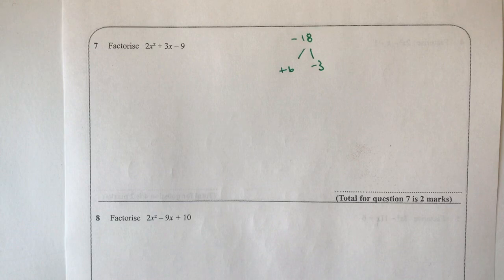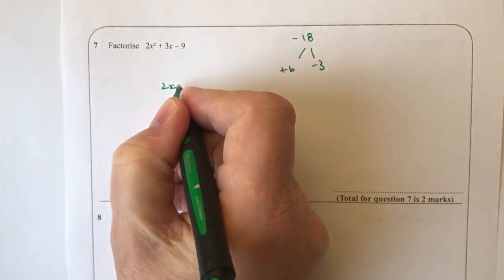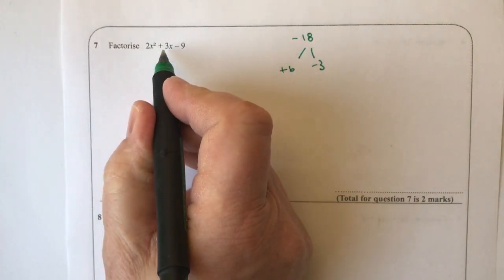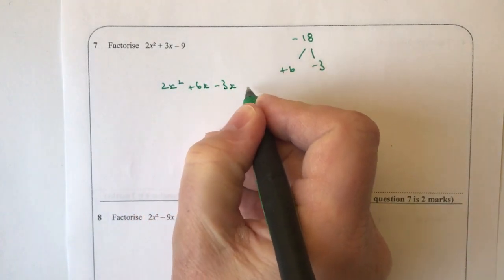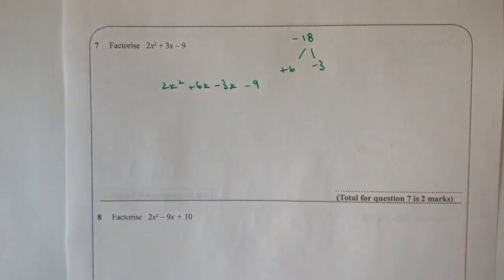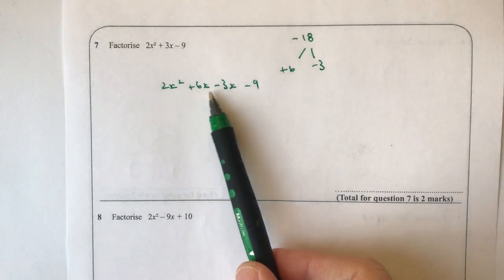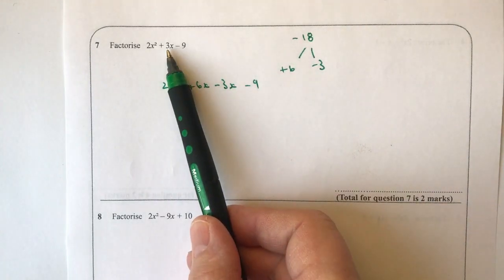So what I'm going to do now is I'm going to rewrite the original equation. I'm going to write 2x squared, and rather than writing plus 3x, I'm going to write plus 6x minus 3x, and then minus 9 at the end. Those middle two terms are no different from that. If I gathered these together, I'm going to get positive 3x.